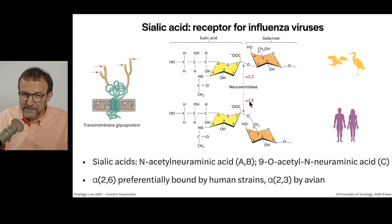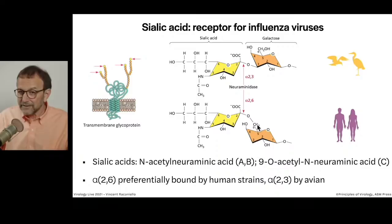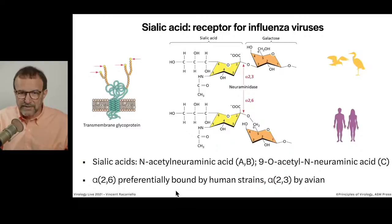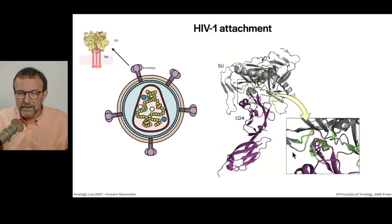In humans, influenza viruses bind to alpha 2,6 linked sialic acid — the number two carbon of sialic acid is linked to the sixth carbon of galactose. A human influenza virus will not readily infect birds because the receptor specificity is wrong. Influenza A and B viruses bind N-acetylneuraminic acid. Influenza C viruses bind neuraminic acid that is 9-O-acetylated — acetylated at the number nine position rather than number five. Alpha 2,6 sialic acids are preferentially bound by human strains; alpha 2,3 by avian strains.